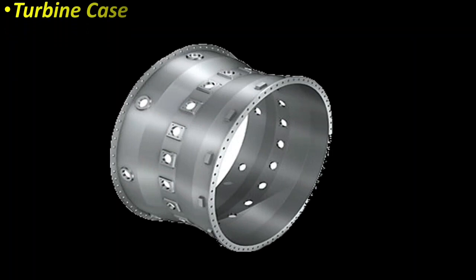Turbine case. You can see here the picture of the turbine case that encloses the turbine rotor and stator assembly and provides either direct or indirect support to the stator element. A typical case has flanges on each end to provide attachment points to the combustion section and the exhaust assembly.